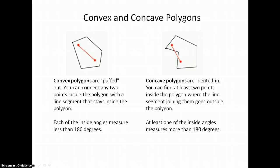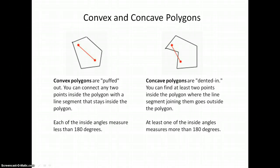Concave polygons are dented in. You can find at least two points inside the polygon where the line segment that joins them goes outside the polygon. If we put an elastic or rubber band around this polygon, it would bridge across the dented part. At least one of the inside angles measures more than 180 degrees. Which one of these inside angles has this measure?